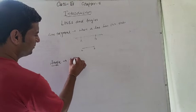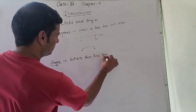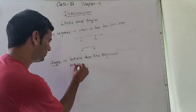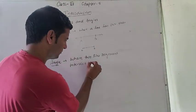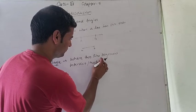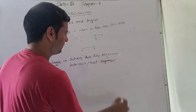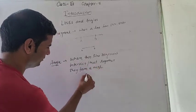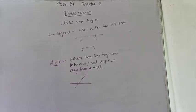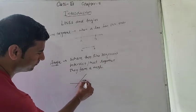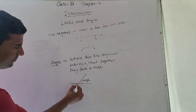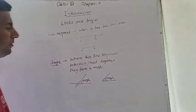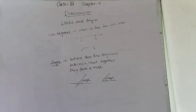Now, what is the angle? When two line segments intersect or meet together, they form an angle. Just like this — you saw two line segments meeting here — they form an angle. This is also an angle. So this is line and angle.